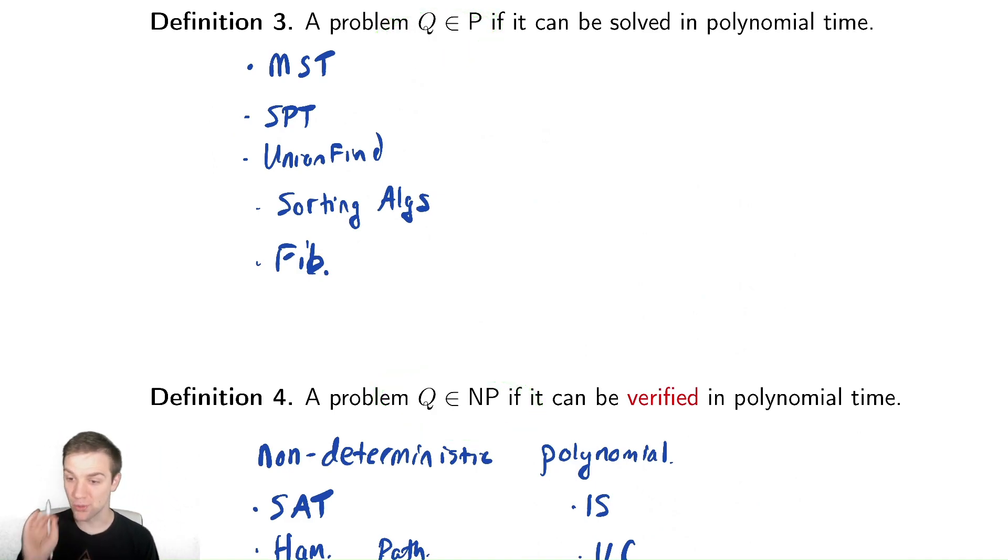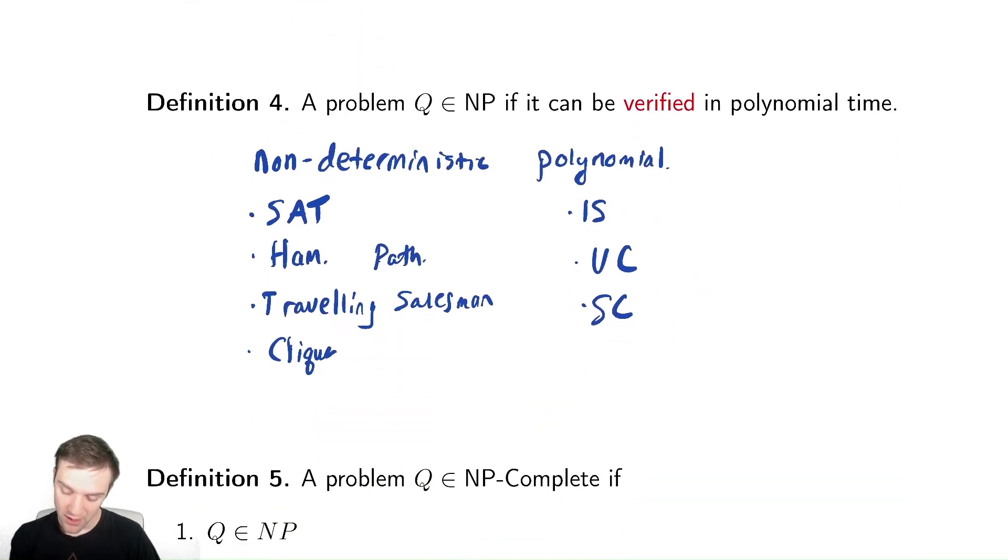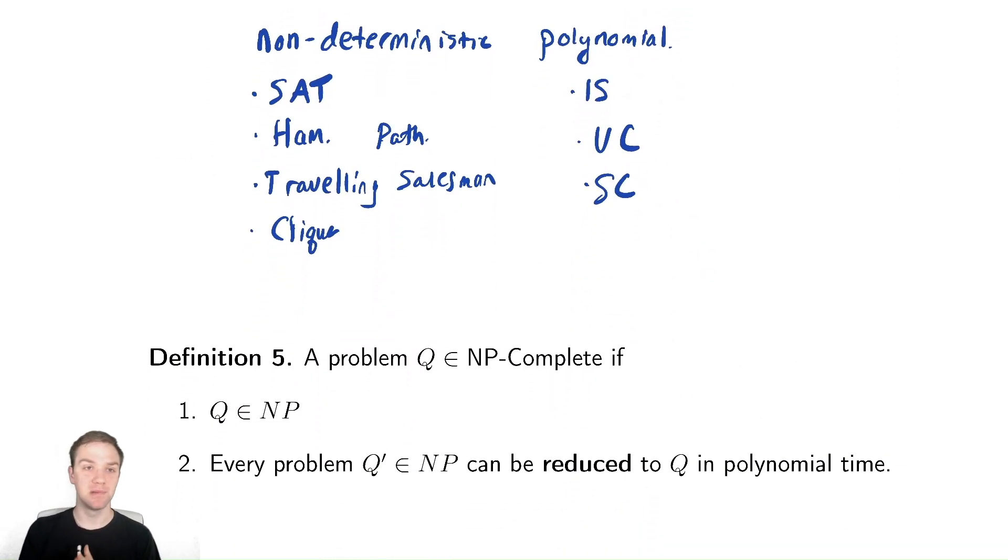Now for the strange thing. We have NP here. These might both seem like reasonable things. There's problems that are hard to solve, but potentially easy to check. And there's problems that are easy to solve, easy meaning polynomial here. We're going to talk about a class called NP complete, the name of this unit. A problem is NP complete if it's in NP.